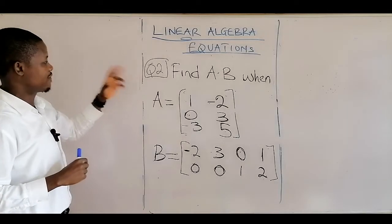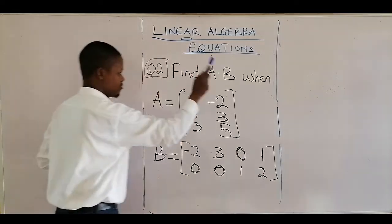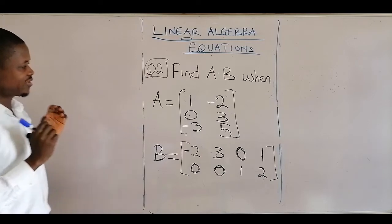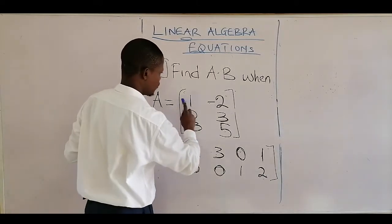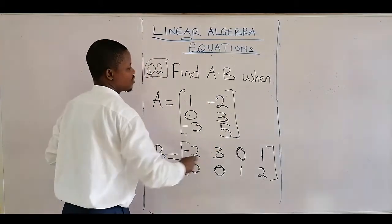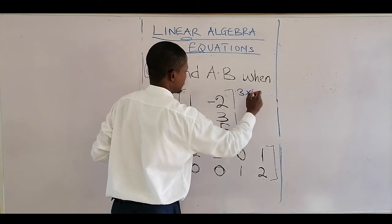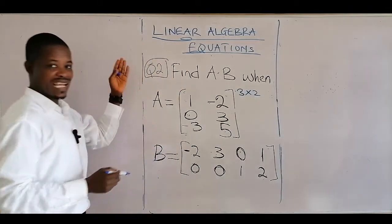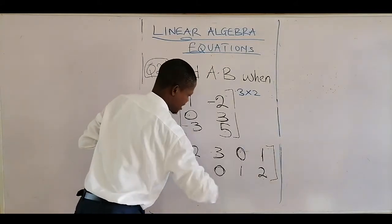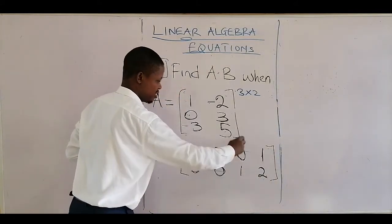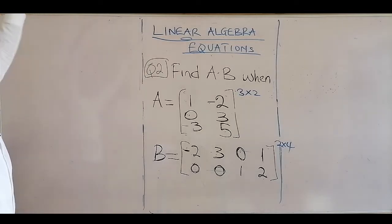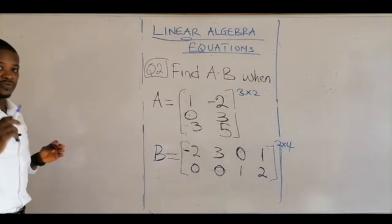Welcome back to this channel. We have to find A times B, where A is a 3 by 2 matrix — three rows and two columns. If you check the second matrix B, we have a first row and second row with four columns, so B is a 2 by 4 matrix — two rows and four columns.